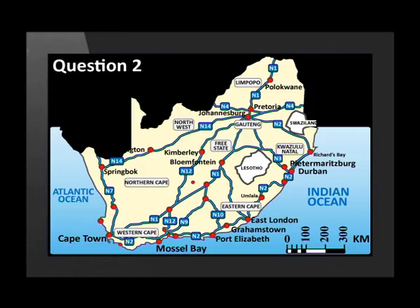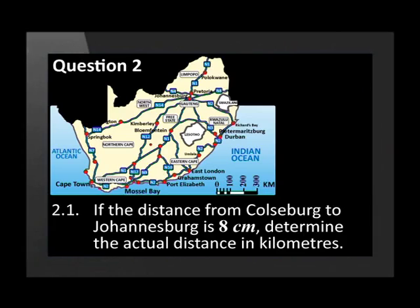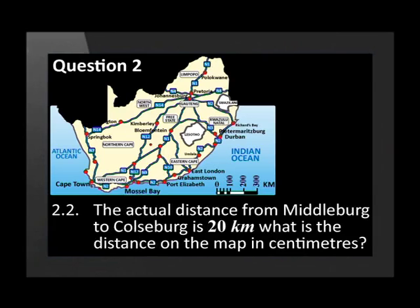Here is a map of South Africa. It uses a bar scale to show the scale. If the distance from Colesburg to Johannesburg is 8 cm, determine the actual distance in km. The actual distance from Middleburg to Colesburg is 20 km. What is the distance on the map in cm?